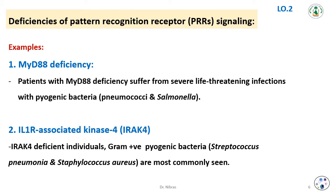Deficiencies of pattern recognition receptors — PRR signaling — are important. As mentioned in previous lectures, recognition of PAMPs by dendritic cells and other cells of the innate immune response is fundamental to the detection of microorganisms. Many gene defects cause impaired signaling through the PRRs. An example is MyD88 deficiency.